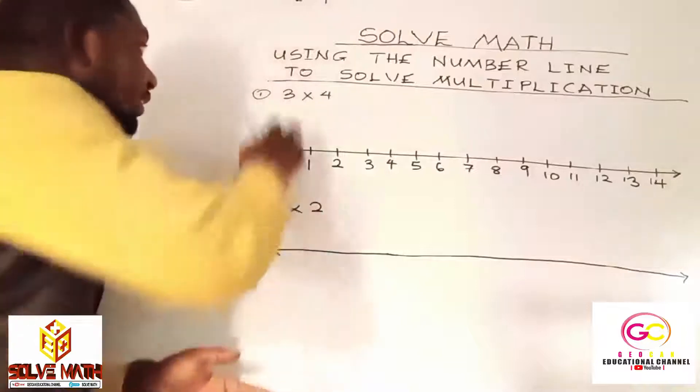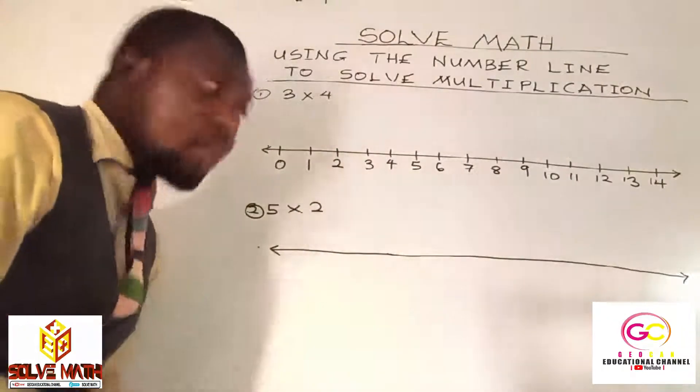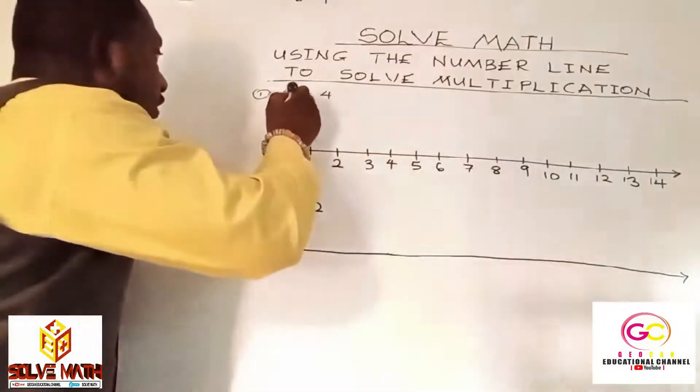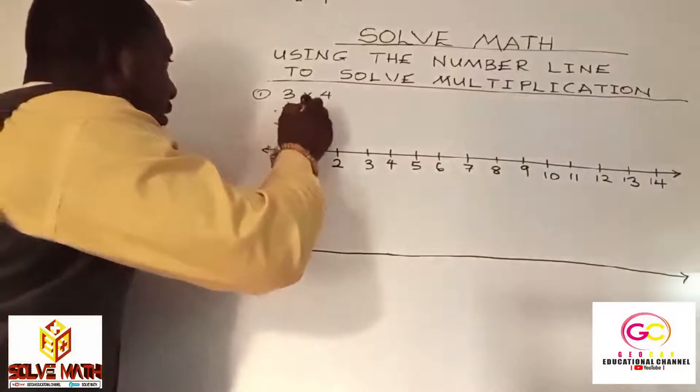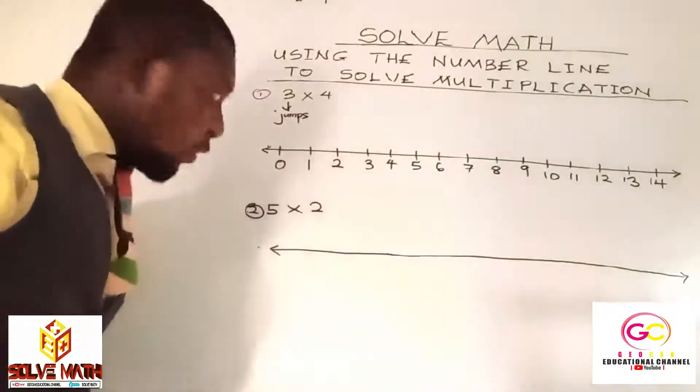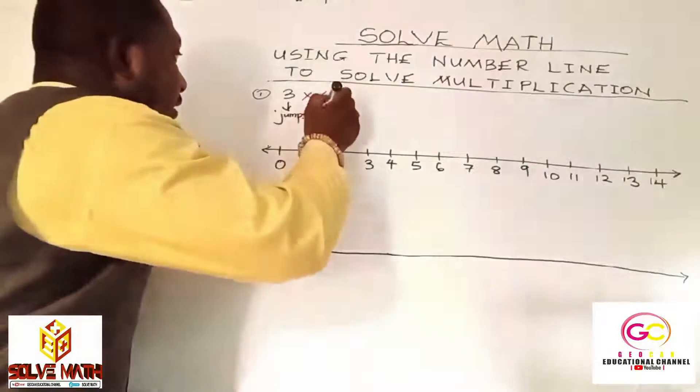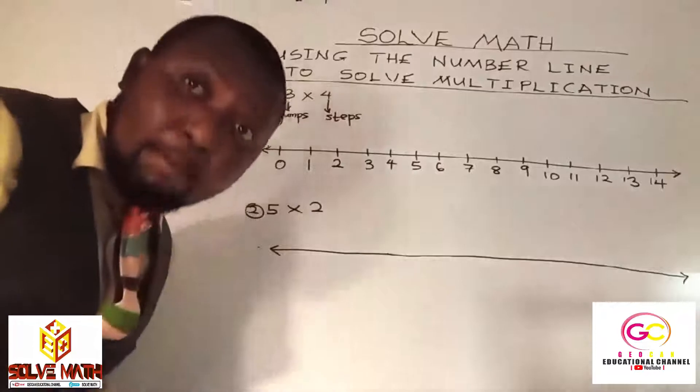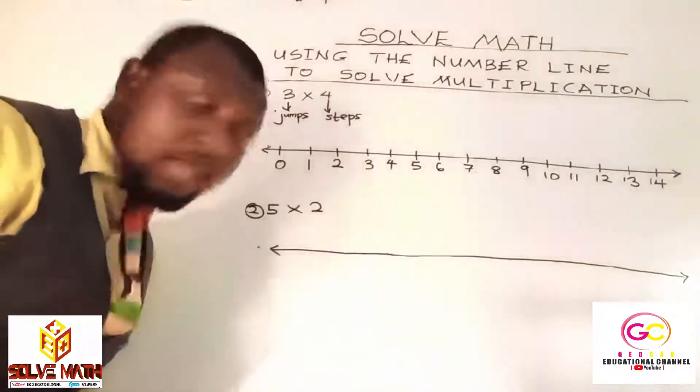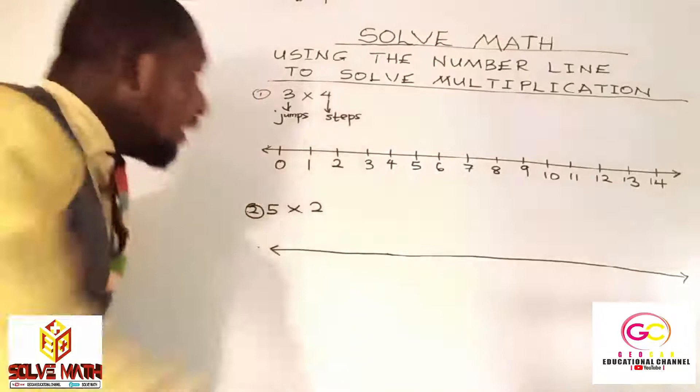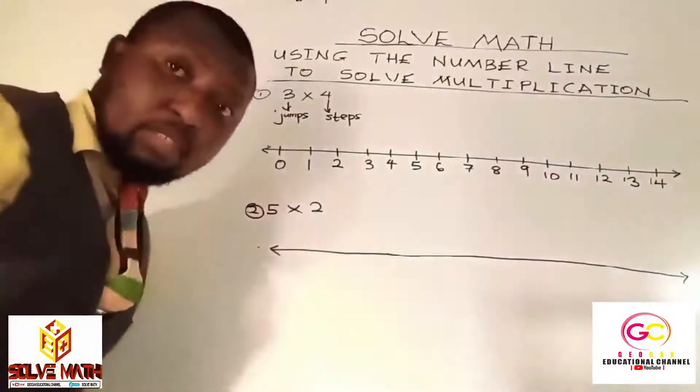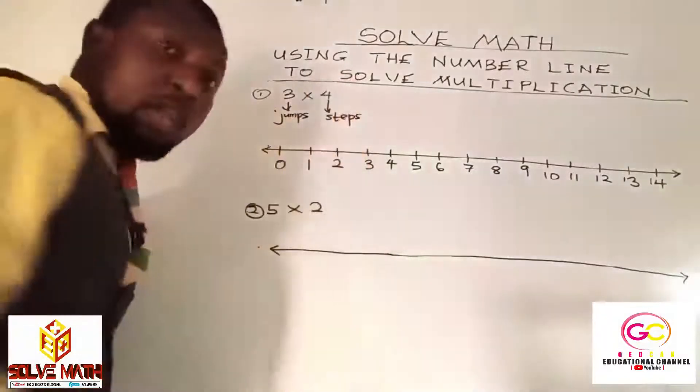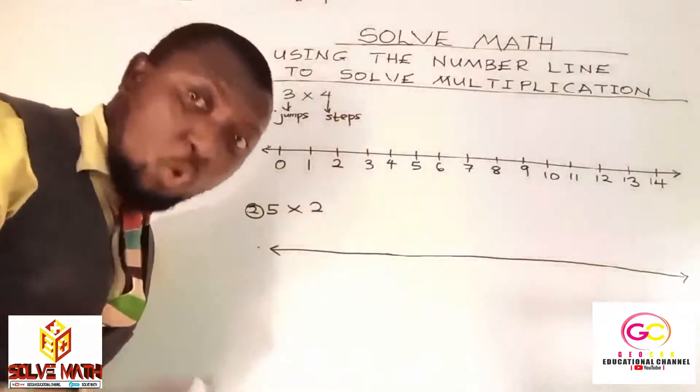Now, pay critical attention. These are two factors, right? This first factor stands for jumps. Say jumps. That's the number of jumps. And this second factor stands for steps. That's the number of steps. What it simply means is that we need three jumps. And in each jump, there should be how many steps? Four steps.